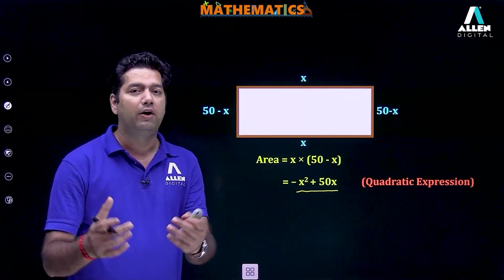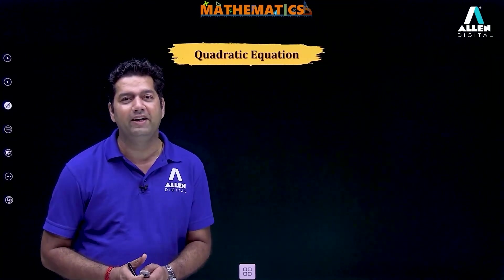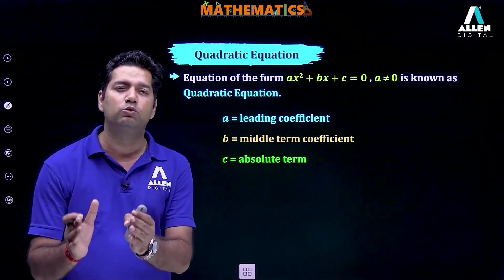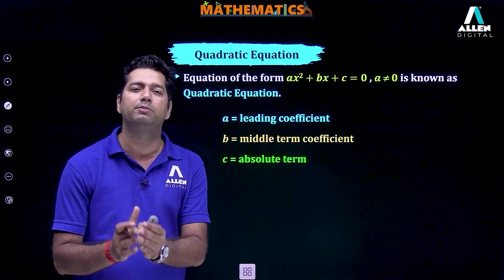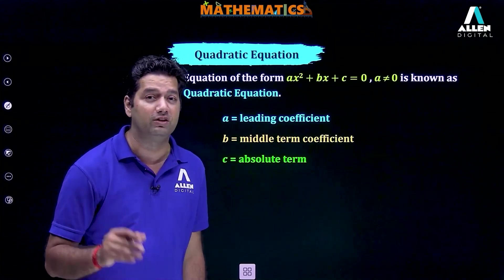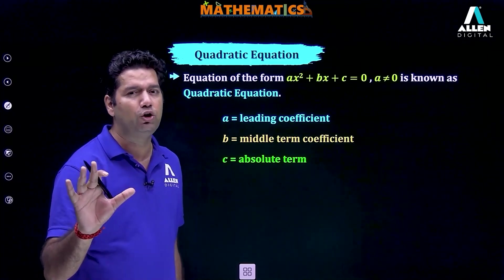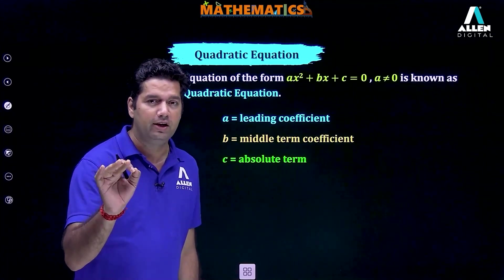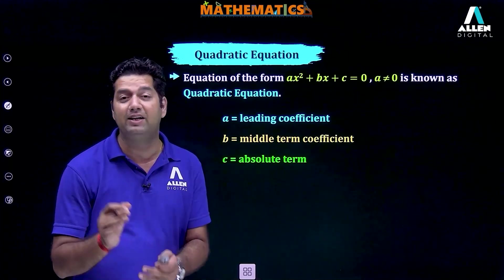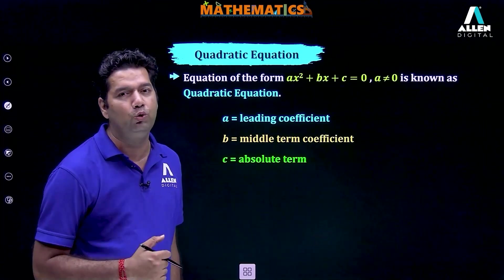These basic concepts are what we are going to learn in this chapter. Starting with quadratic equation: an equation of the form ax square plus bx plus c is equal to 0 is known as a quadratic equation, where a is not equal to 0 — the leading coefficient should not be equal to 0. A is the leading coefficient, B is the coefficient of x, and C is known as the constant term or absolute term.